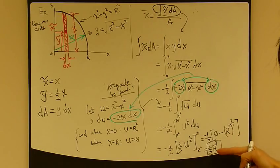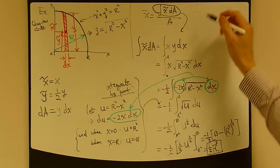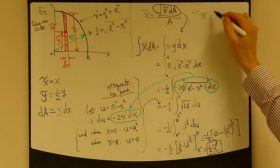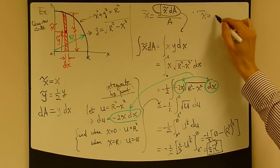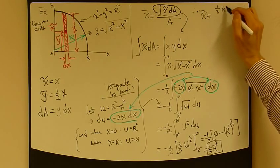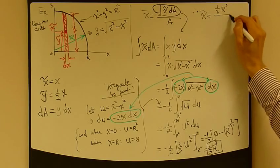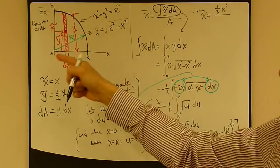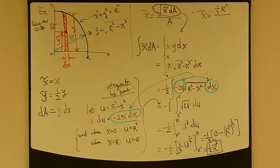So, this is the first moment. Therefore, replace it back into this original equation. So, x bar equals one-third of r third divided by area of this quarter circle.